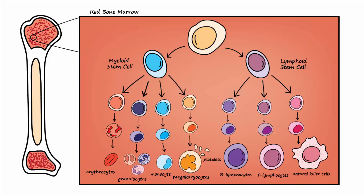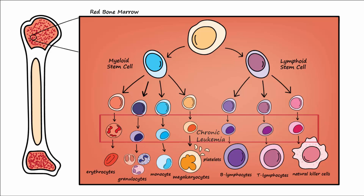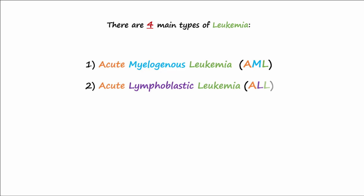Both the myelogenous and lymphoblastic types of leukemia have acute and chronic forms. If the breach occurs within stem cells or immature blast cells, the leukemia will be the acute form. If the breach occurs within later, nearly matured cells, the leukemia will be the chronic form. Altogether, there are four main types: acute myelogenous leukemia (AML), acute lymphoblastic leukemia (ALL), chronic myelogenous leukemia (CML), and chronic lymphoblastic leukemia (CLL).